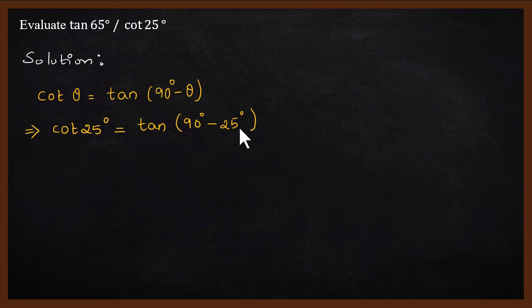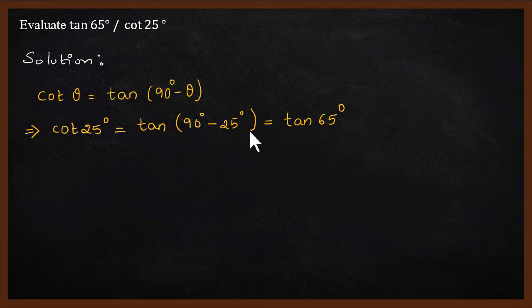90° minus 25° simplifies to tan 65°. 90 minus 25 is 65. That means cot 25° is the same as tan 65°.